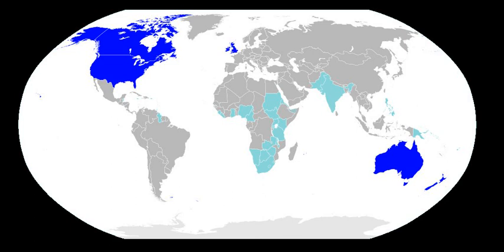The consonants that may appear together in onsets or codas are restricted, as is the order in which they may appear. Onsets can only have four types of consonant clusters: a stop and approximant as in 'play', a voiceless fricative and approximant as in 'fly' or 'sly', S and a voiceless stop as in 'stay', and S plus a voiceless stop and approximant as in 'string'. Clusters of nasal and stop are only allowed in codas. Furthermore, H can only occur in syllable-initial position, and NG only in syllable-final position.